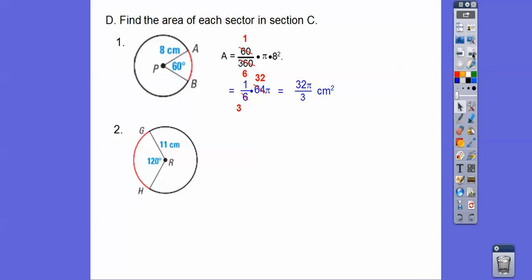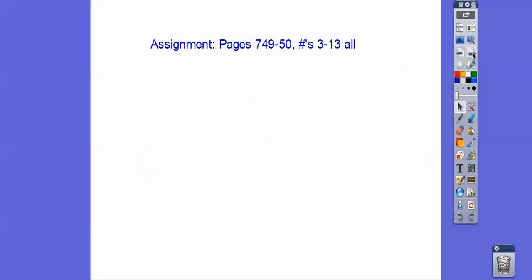Alright, how about this guy right here. 120 over 360 πr², so π times 11 squared. This is still 1/3, so this is 121, so it looks like we get 121π over 3 centimeters squared right there. Alright, you guys, that's it. If you're in our class, in my class, I'm going to assign you that. Take care.